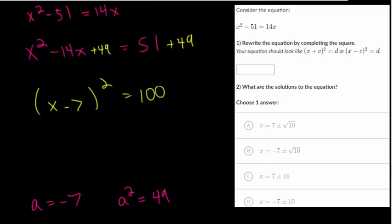And that is the answer to question number one. So in that box, you're going to write x minus 7 squared equals 100.